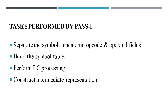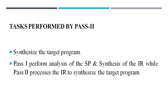Now let us switch to the tasks performed by Pass 2. As discussed, Pass 2 synthesizes the target program. Pass 1 performs analysis of the source program and synthesis of the IR, while Pass 2 processes the IR to synthesize the target program. The input to Pass 2 consists of different data structures: the symbol table, literal table, and constant table.